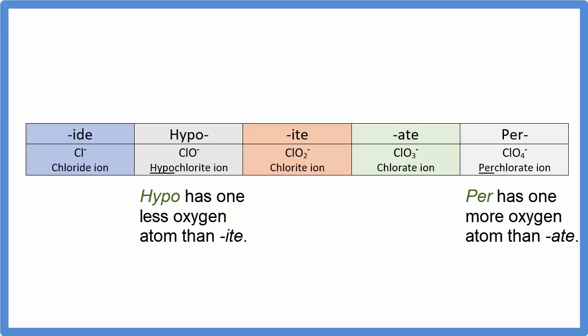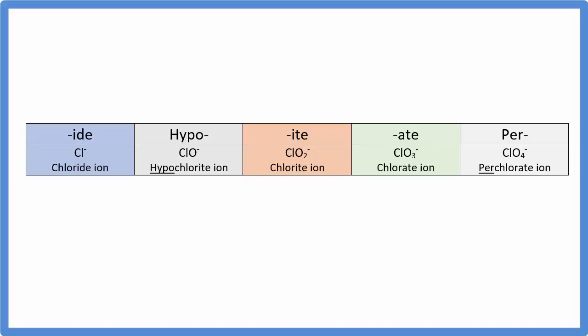Note that most polyatomic ions don't have a compound that has hypo or per in the name. Chlorate is really the one that you'll see quite a bit. So the really important rule is the use of the ITE and the ATE.